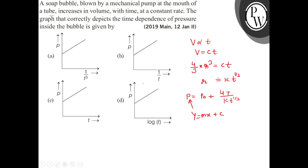I have to see the graph here, 1 by t raised to 1 by 3. So according to this, this equation we can arrange as 4T upon k into t raised to 1 by 3 plus P0.